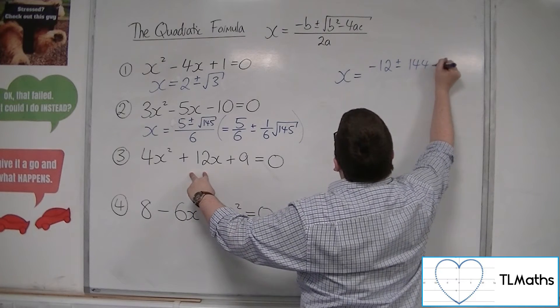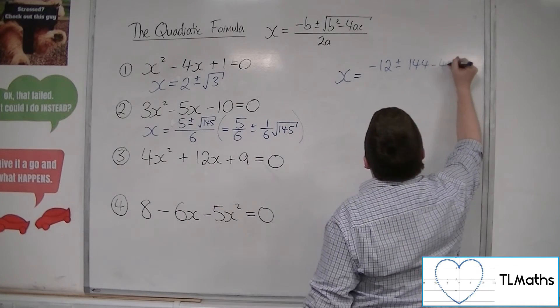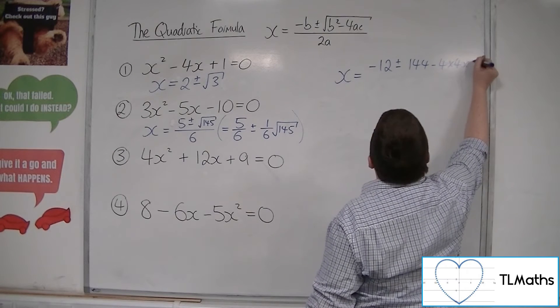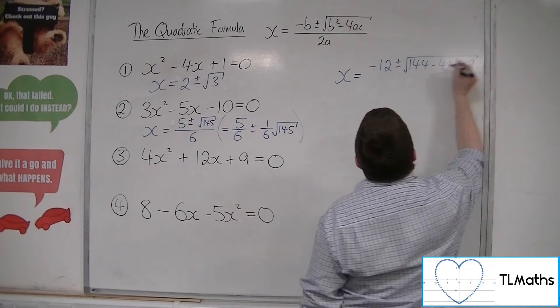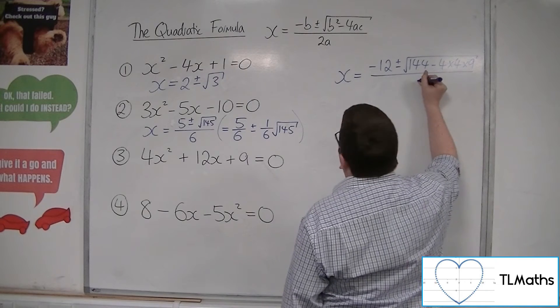So 144, take away 4 times 4 times 9, square rooted all over 2a, so 8.